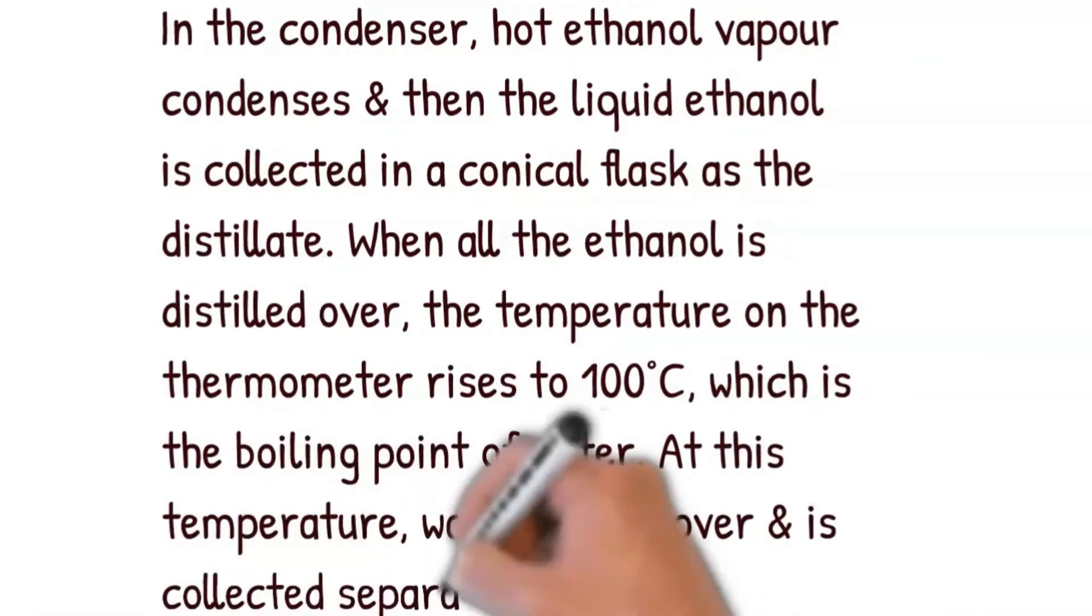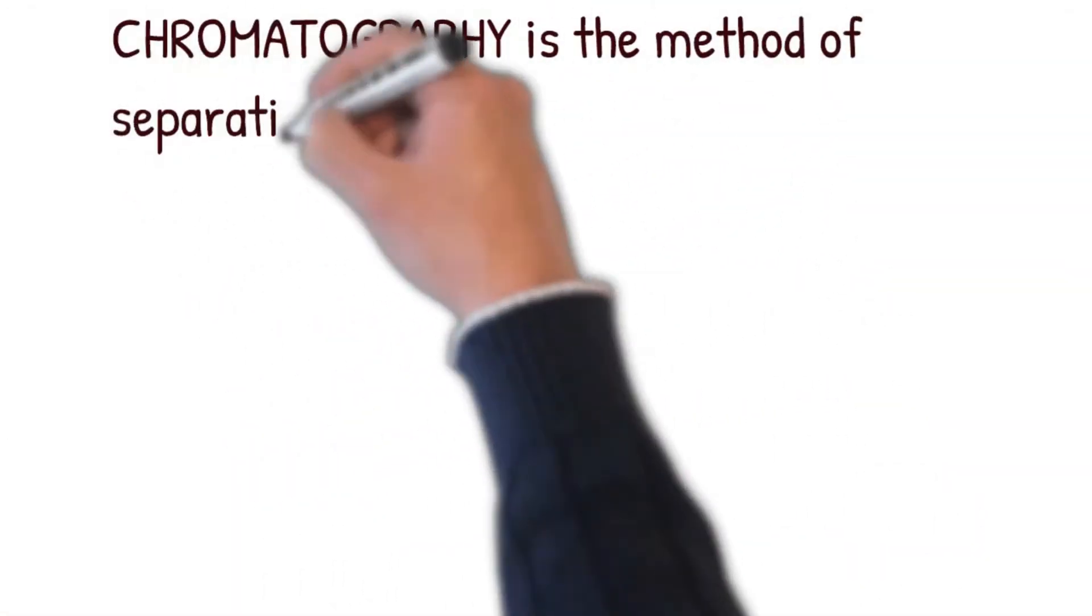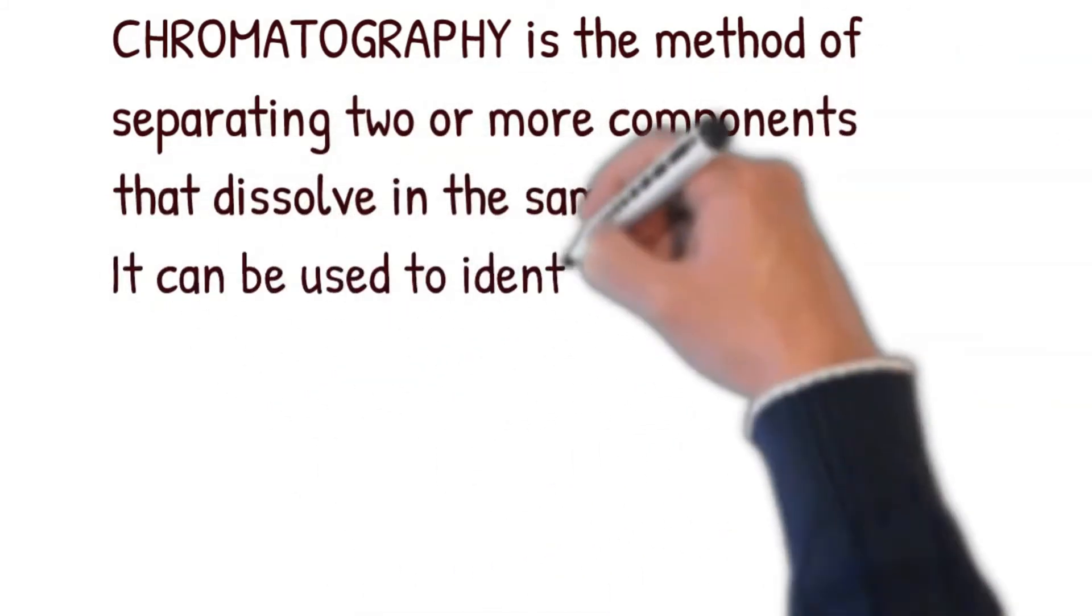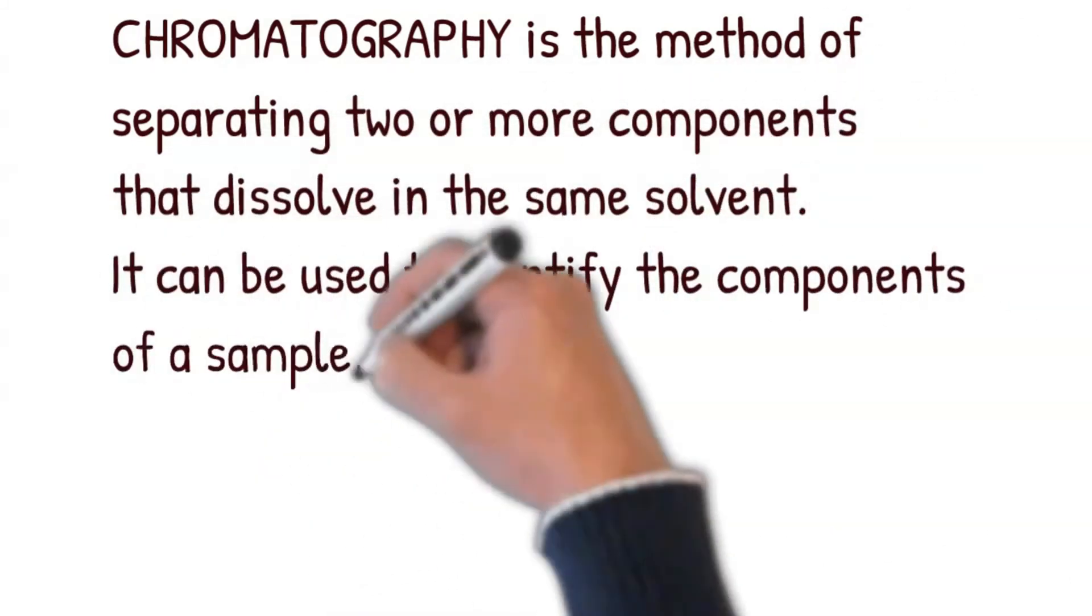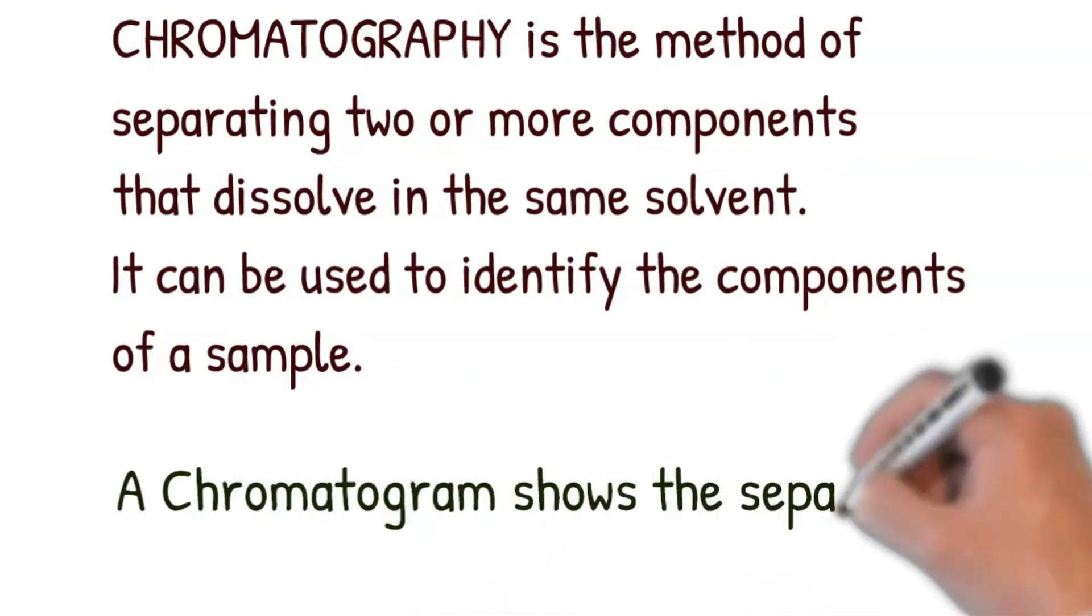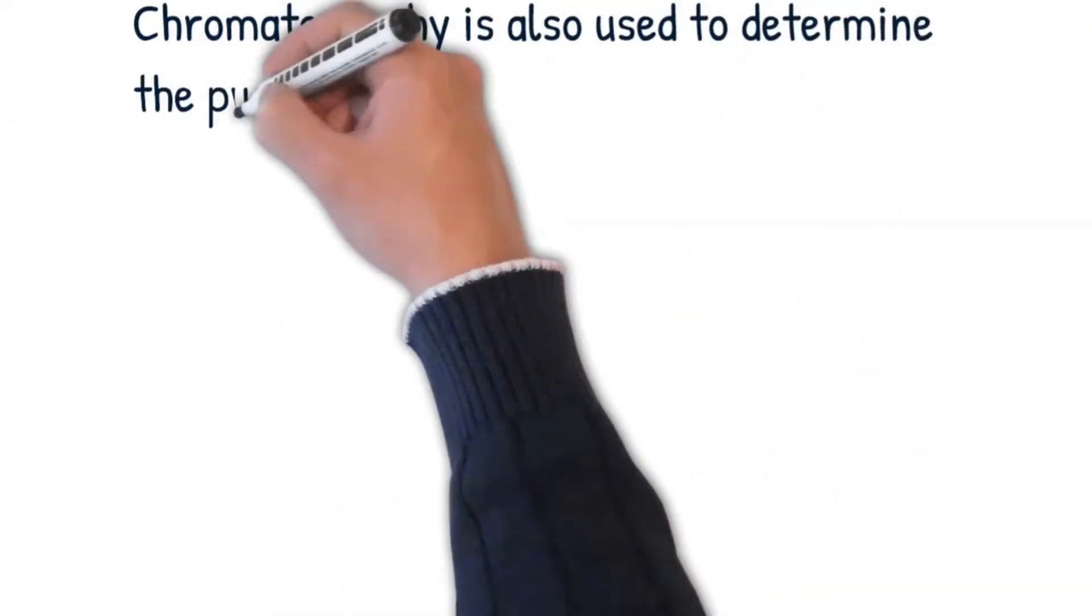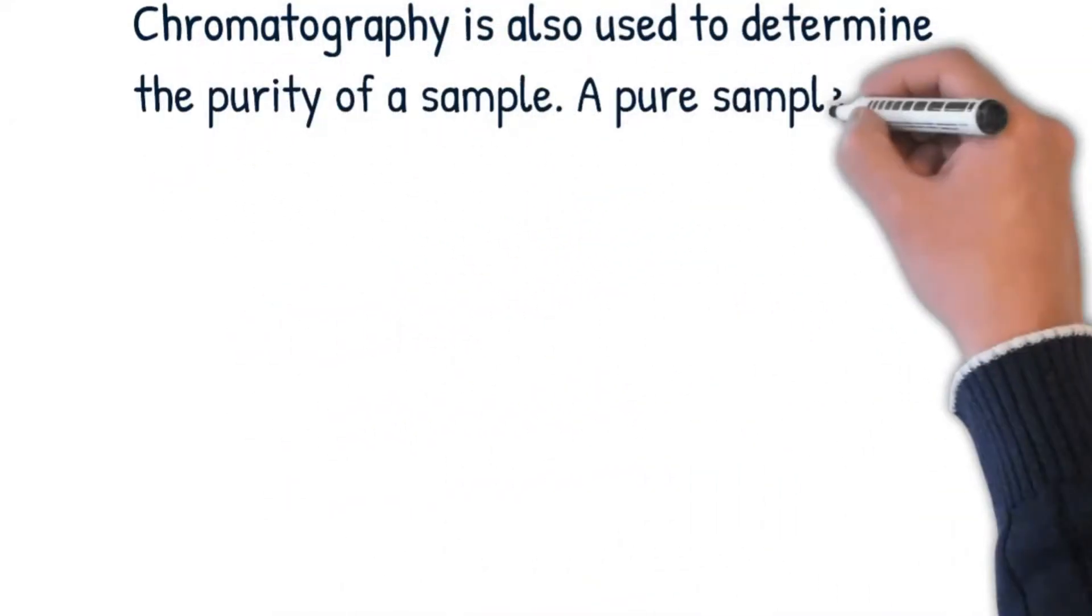Chromatography is the method of separating two or more components that dissolve in the same solvent. It can be used to identify the components of a sample. A chromatogram shows the separated components of a sample. Chromatography is also used to determine the purity of a sample. A pure sample gives only one spot on the chromatogram.